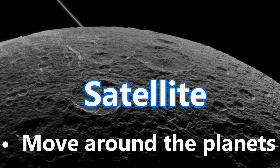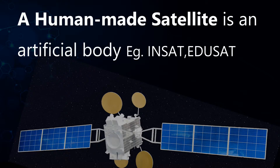A satellite is also part of the solar system. A satellite moves around a planet. The Moon is the only natural satellite of Earth. A human-made satellite is an artificial body; it is carried by a rocket and placed in orbit around Earth.